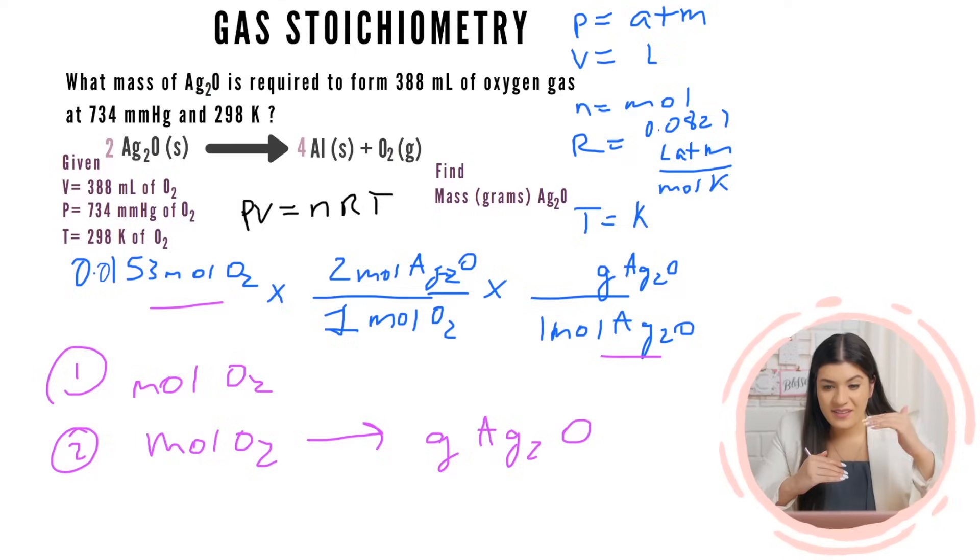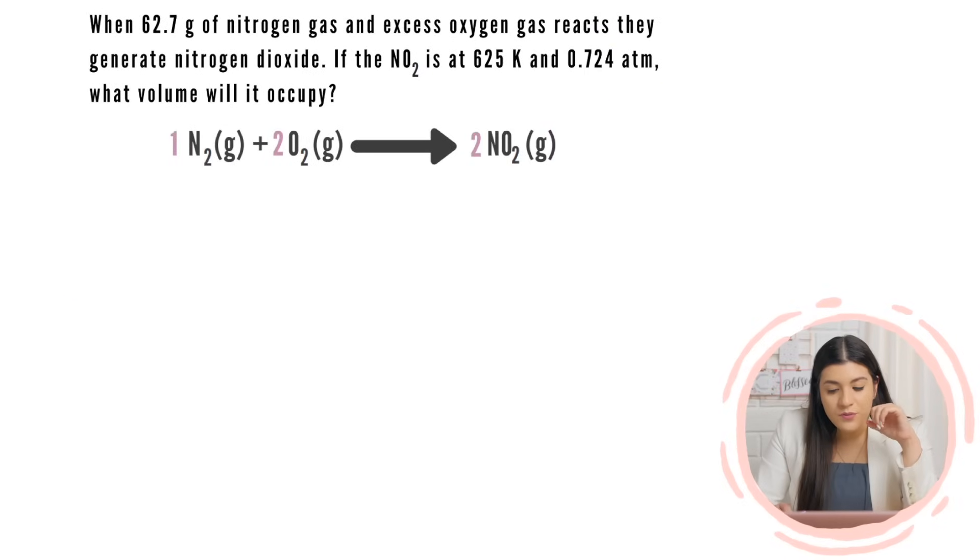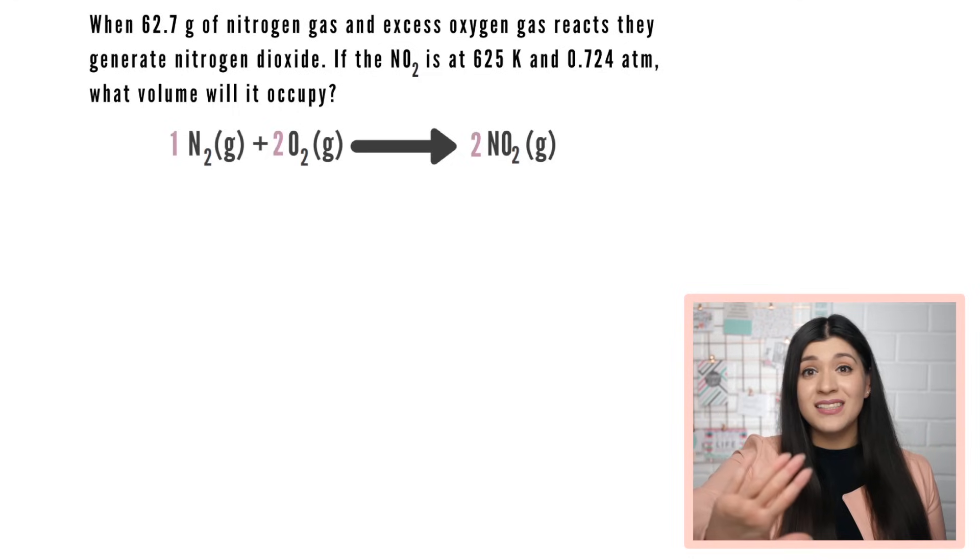So we found our moles of O2, which was the 0.153 moles of O2. Now we're trying to get from moles of O2 to moles of silver oxide. So how do I get there? How do I go from moles of O2 to moles of silver oxide? Do you just, would it be two over one? Two Ag2O over one. Why don't you try this one? Pause the video. Seriously, pause the video. Try this out. Let's do this together. Come on!